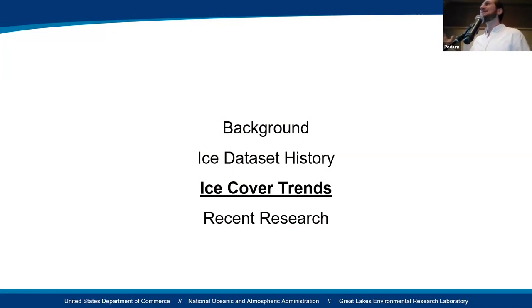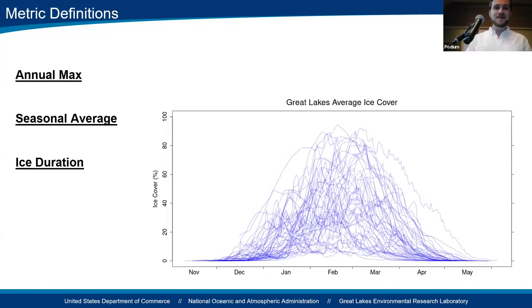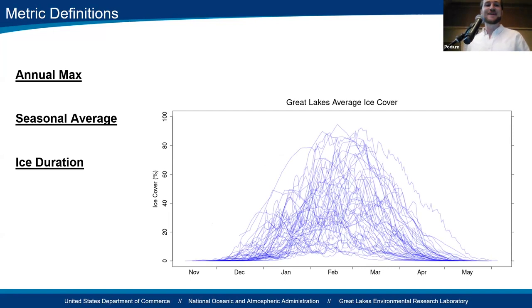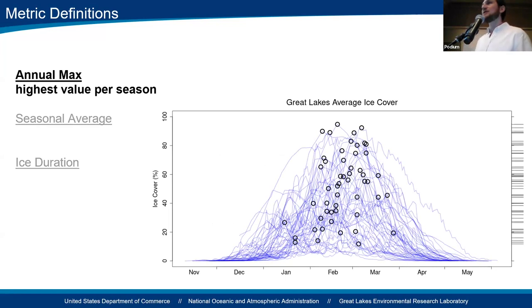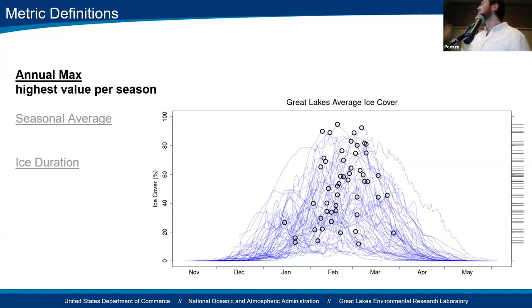I want to talk about what we can learn from this data. For the large-scale trends, I'm going to define three different metrics: annual max, the seasonal average, and the ice duration. The annual max is just the highest value ice cover achieved each year, and I'm highlighting that with circles on this graph — it's super variable, 10% some years, 80% others, and the timing of when it occurs is also quite variable. For the trend analysis, I'm considering what time of year it happens, essentially building a time series and then doing a regression.